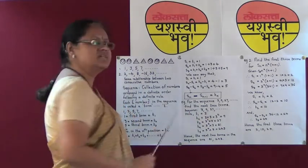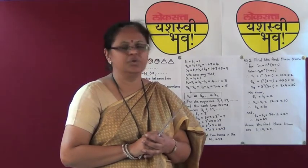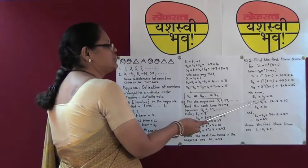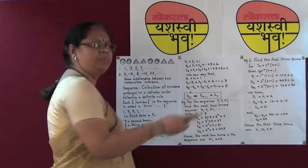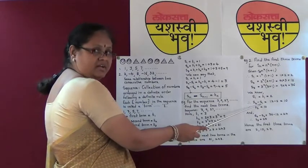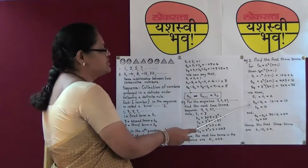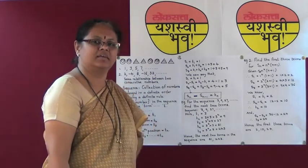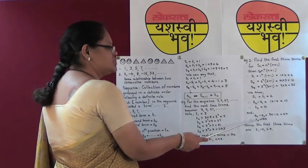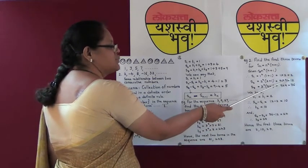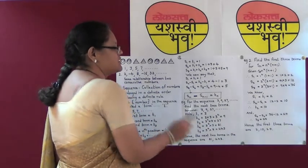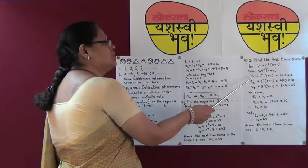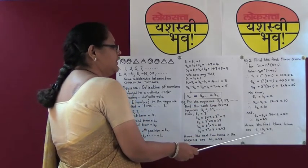Now using the formula to find T1, T2, and T3: S1 equals T1, which is 2. T2 is S2 minus S1, that is 12 minus 2, which is 10. T3 is S3 minus S2, that is 36 minus 12, which is 24. So the first three terms for Sn equal to n squared times (n plus 1) are 2, 10, and 24.